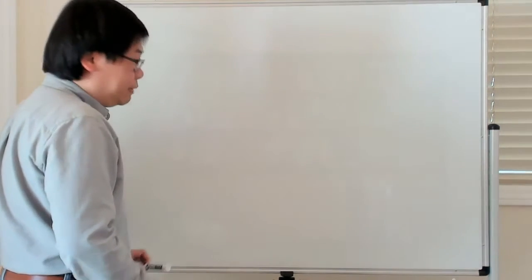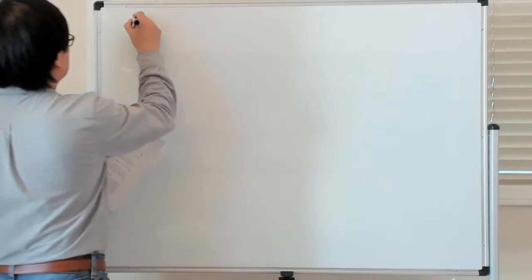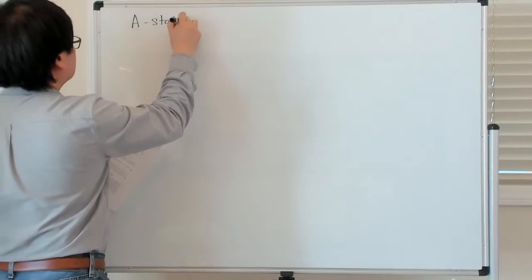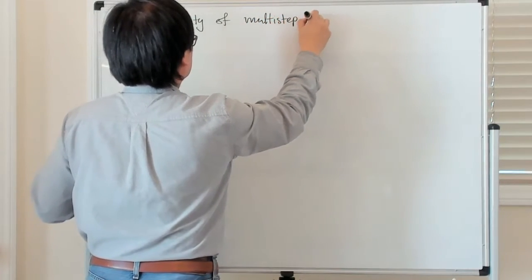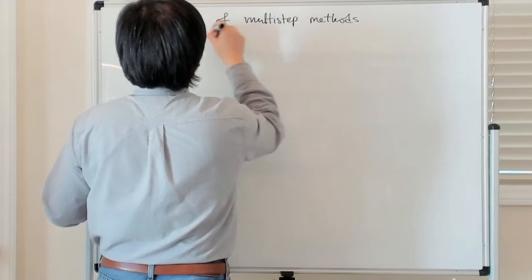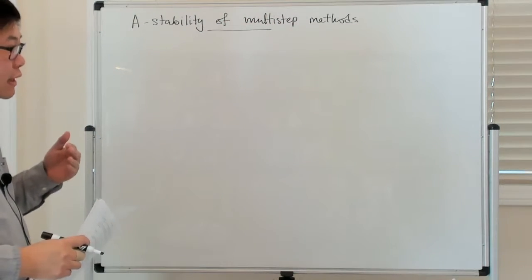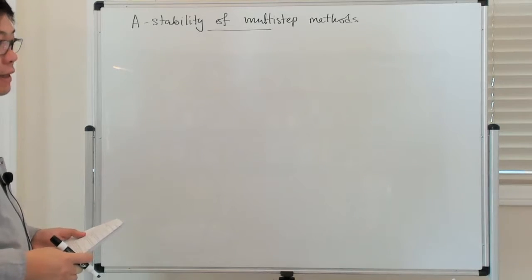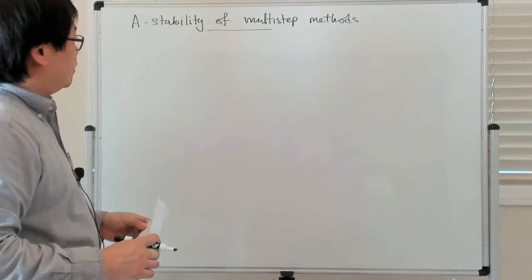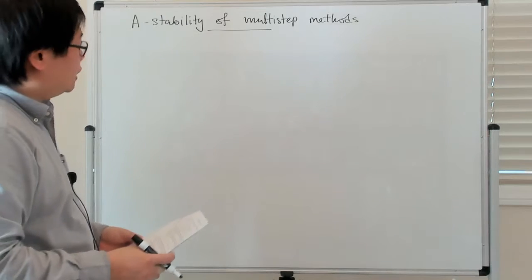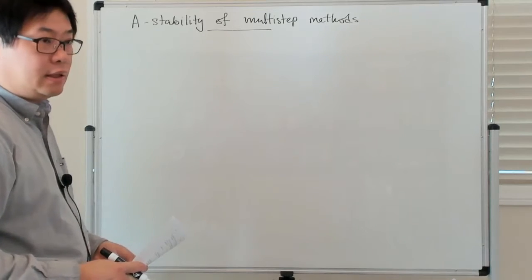Now we're going to talk about A-stability in the context of multi-step methods. One immediate concern one has to think about with multi-step methods, of course, is that you need to specify the initial data. And that's not something which just comes from the initial value problem formulation — you have to construct that initial data. So you can ask: what does it really mean for a multi-step method to be stable?